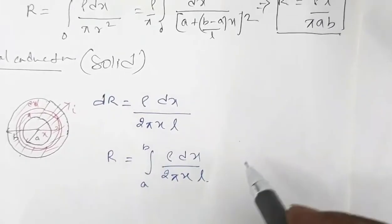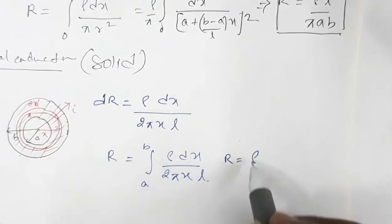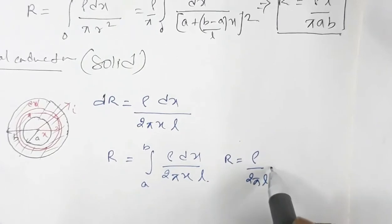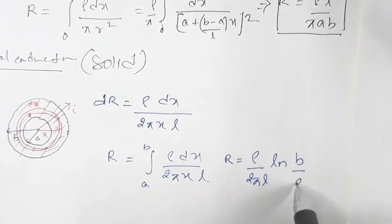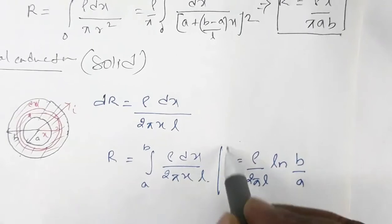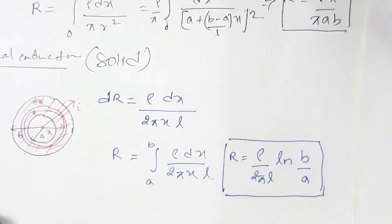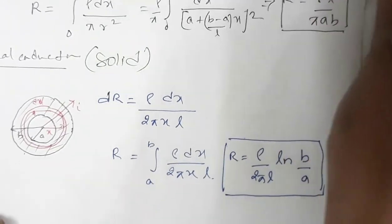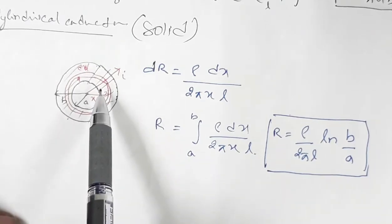This is a simple calculation, and it gives R equal to rho divided by 2 pi L, times the natural log of B over A. This is the expression for the final resistance.